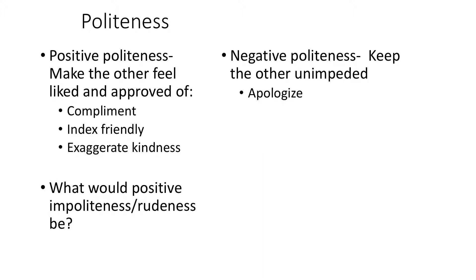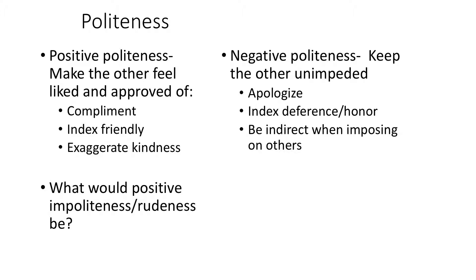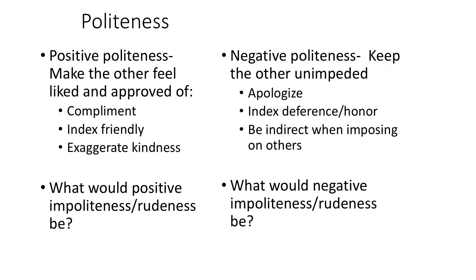Negative politeness normally takes the form of apologizing — pre-apologizing or post-apologizing for any imposition or threat to someone's independence. It also involves overtly indexing your deference or honor, the power distance between the two speakers, and being indirect — using indirect speech acts where the illocutionary force is different than the locutionary form, especially when imposing on others. Negative impoliteness or negative rudeness would be making bare demands, like 'give that to me' or 'do that for me' — giving a direct command with no mitigation, which is a direct threat to your sense of independence.